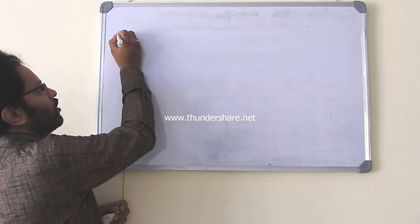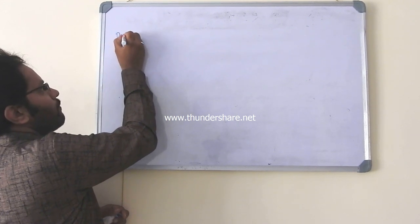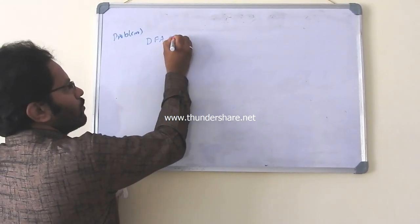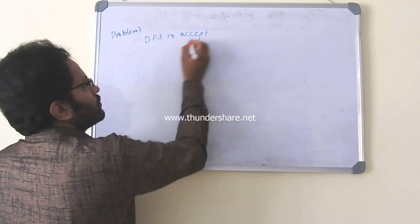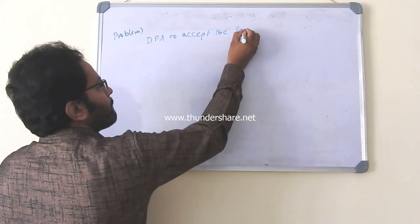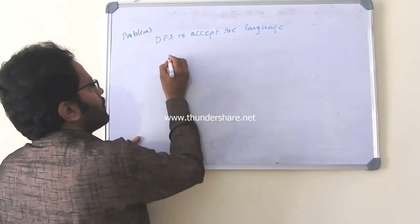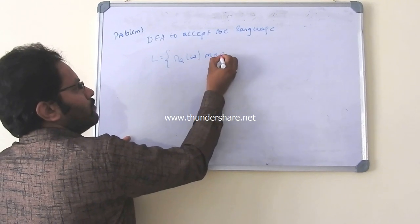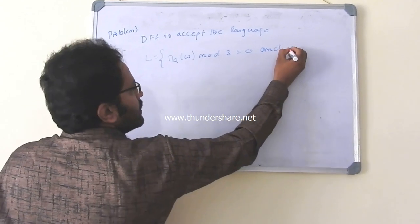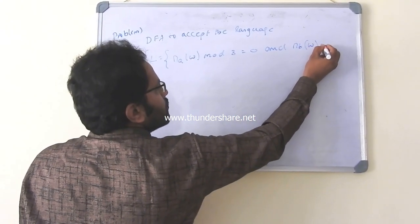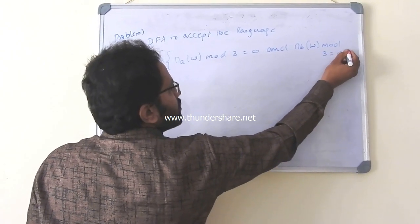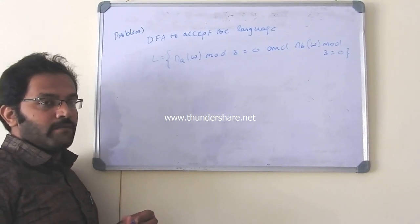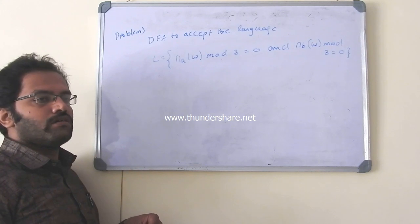Let me take an example of how to solve a problem. DFA to accept the language N equals number of A's in W mod 3 equals 0 and number of B's in W mod 3 equals 0. If you observe clearly, the question clearly says we are worried about count of A's and B's but not the pattern.